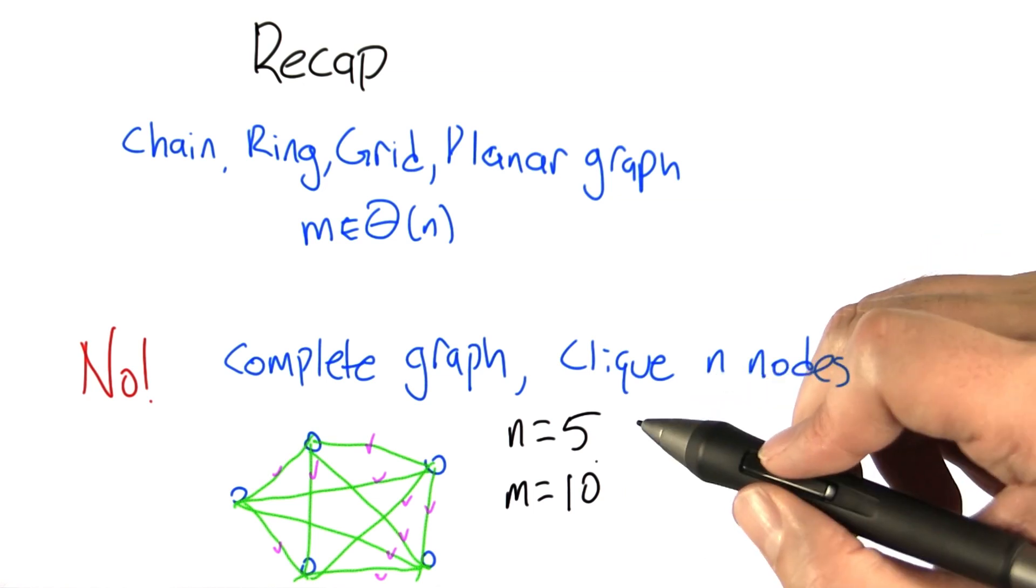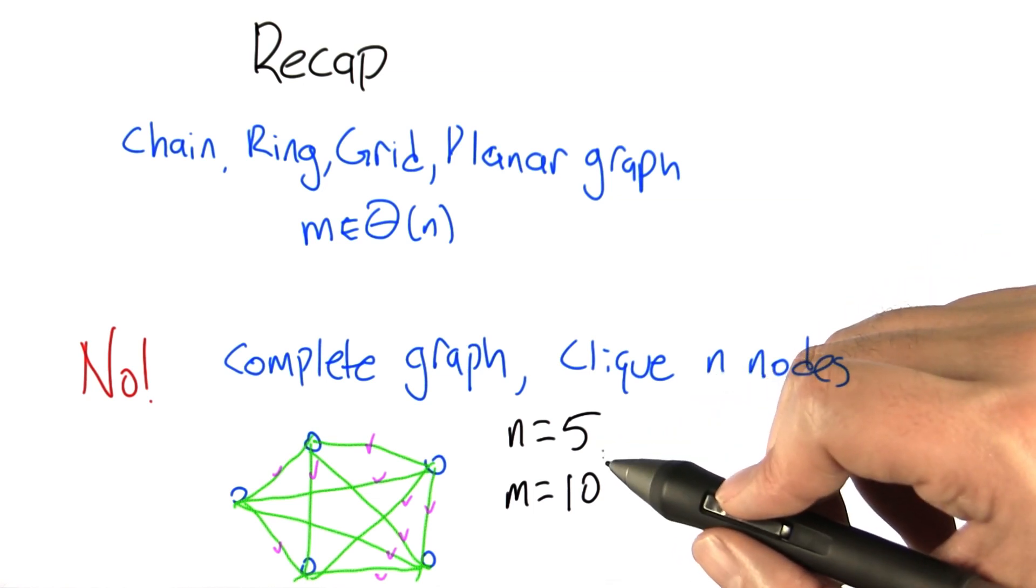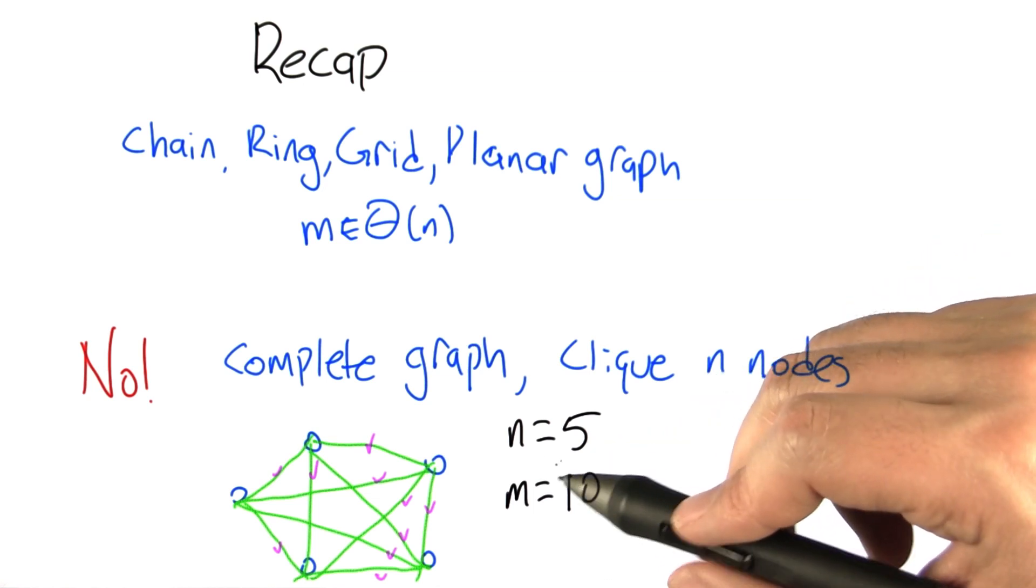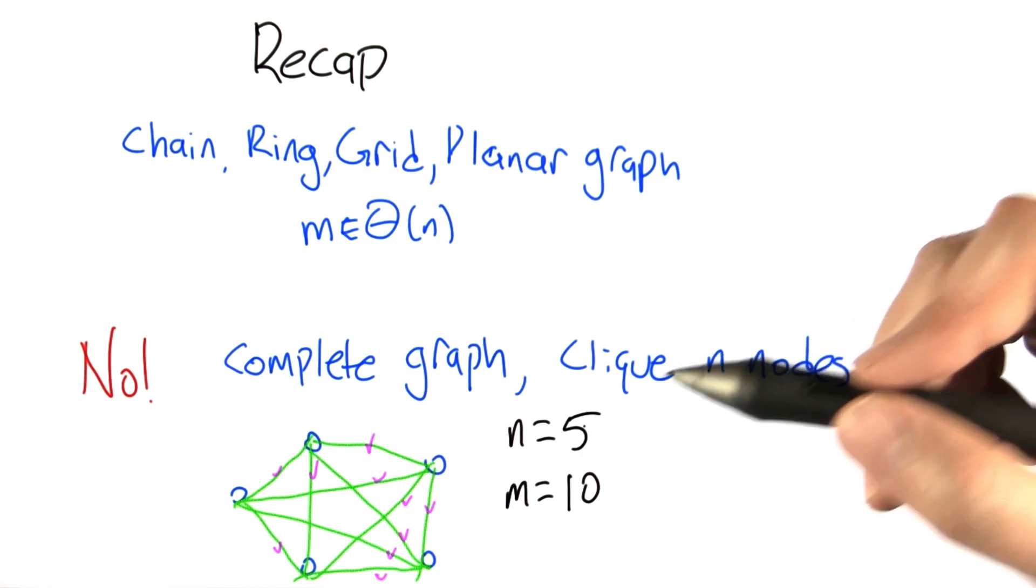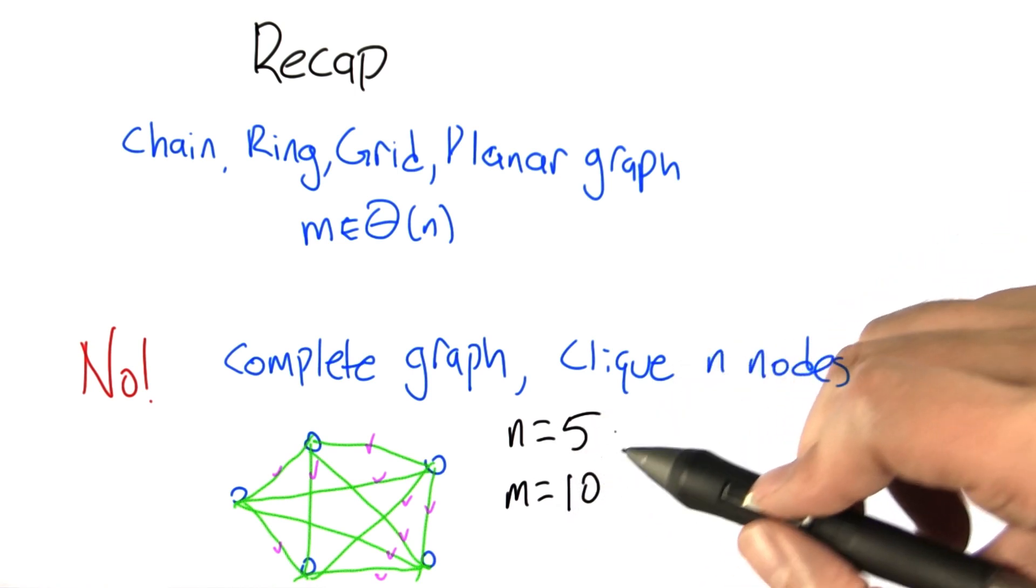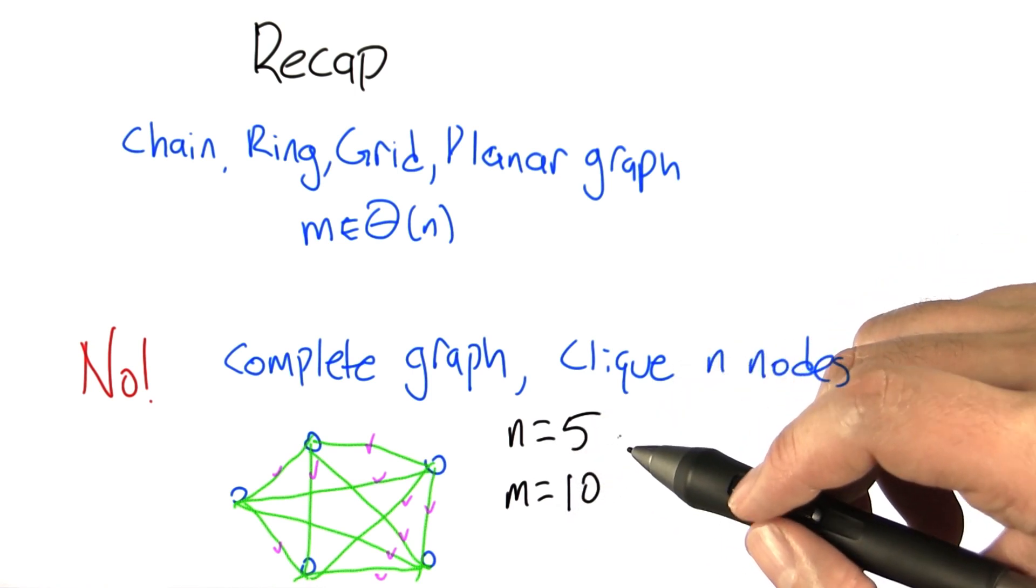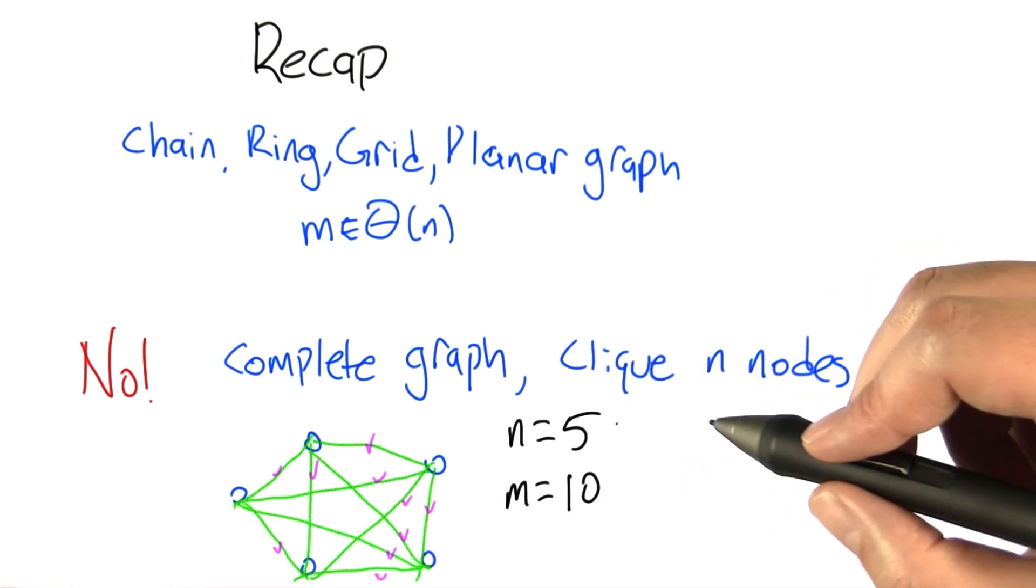But this doesn't really tell us anything about the growth rate. It just tells us that in this one example, it could be the number of edges is twice the number of nodes. We don't know. We need to generate a more comprehensive formula. In fact, I'm going to say you need to generate a more comprehensive formula.